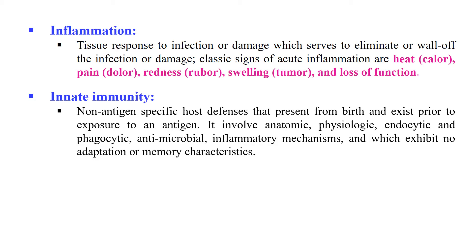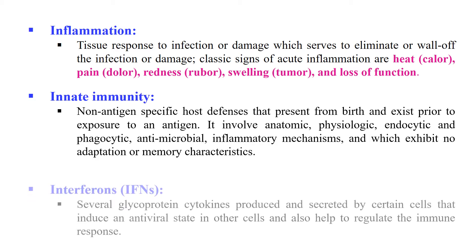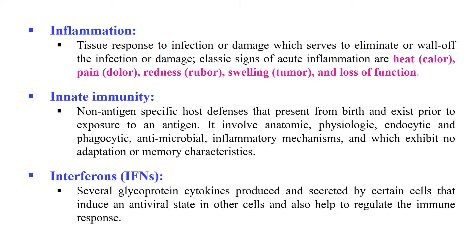So the immunity which is present from birth and is non-antigen specific is known as Innate Immunity. Next, Interferons. These are certain glycoproteins which are produced by some cells and are antiviral in action — they produce an antiviral state in other cells. So these are known as Interferons.